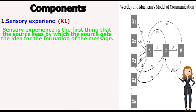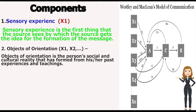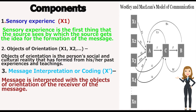The second component is object of orientation. Object of orientation is the person's social and cultural reality that has formed from his or her past experience and teachings. The next component is message and message interpretation or coding.